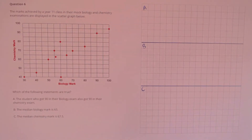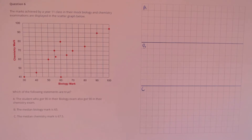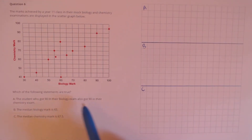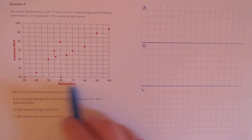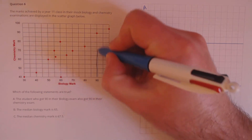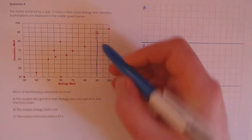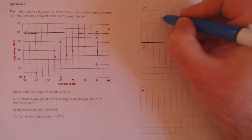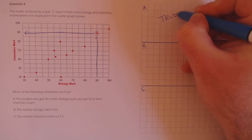Question 6. The marks achieved by a year 11 class in their mock biology and chemistry examinations are displayed in the scattergraph below. Which of the following statements are true? Let's look at statement A first: the student who got 90 in their biology exam also got 90 in their chemistry exam. Looking at biology mark 90, the chemistry mark for that point is 90, so that's true.